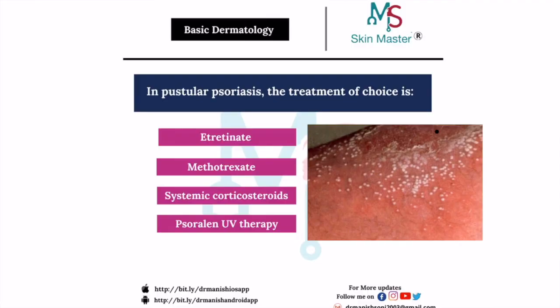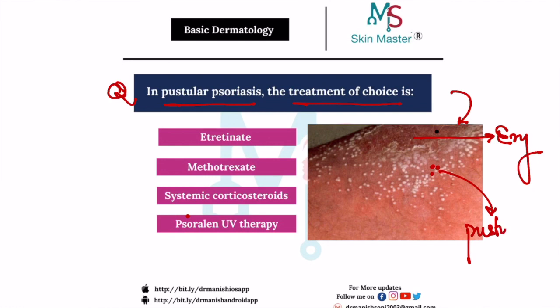In this image-based question, they are asking about postular psoriasis and the treatment of choice. In the image you can see the lesions are slightly erythematous, there are a few pus-filled lesions — these are pustules — and there is scaling also present.